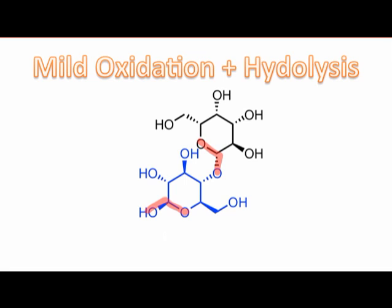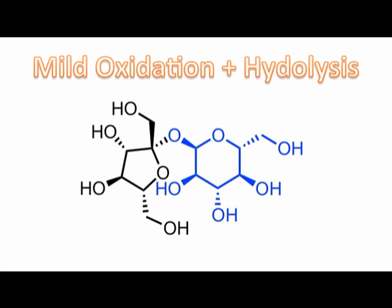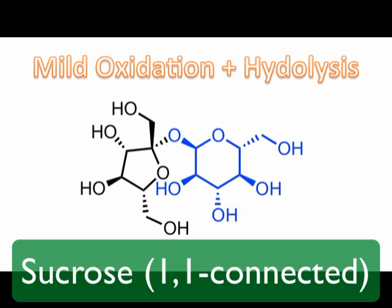This is useful because we can use mild oxidation to determine which of two anomeric positions is involved in a glycosidic linkage. But what happens if both anomeric positions are part of the glycosidic linkage in a disaccharide? Pause the video now and see if you can predict the results of treating sucrose, a 1-1 connected sugar, with aqueous bromine.